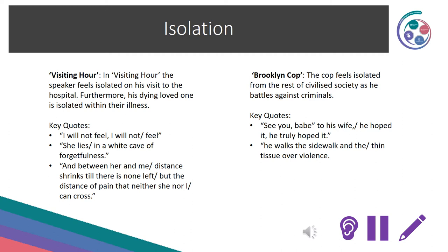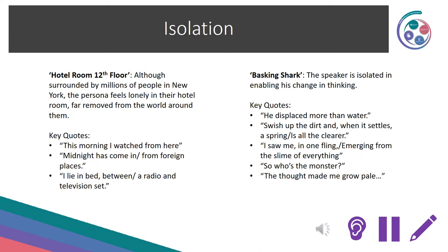Isolation also occurs in Brooklyn Cop — the cop feels isolated from civilised society as he battles against criminals. Key quotes: 'See you babe, to his wife, he hoped it, he truly hoped it' and 'He walks the sidewalk and the thin tissue over violence.' Isolation occurs in Hotel Room 12th Floor — although surrounded by millions of people in New York, the persona feels lonely and far removed from the world: 'This morning I watched from here' and 'I lie in bed between a radio and a television set.' In Basking Shark, isolation enables a change in thinking. Key quotes: 'He displaced more than water', 'Swish up the dirt, and when it settles, a spring is all the clearer', 'I saw me in one fling, emerging from the slime of everything', 'So who's the monster?', and 'The thought made me grow pale.'